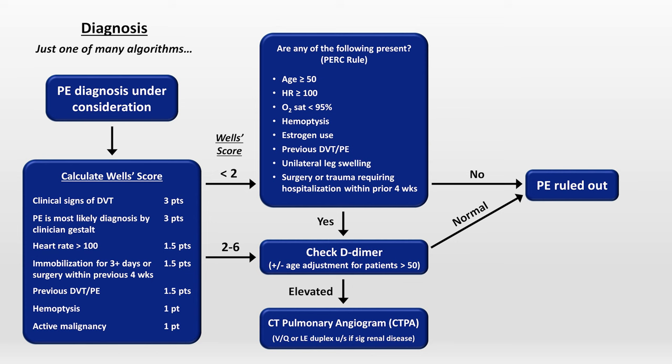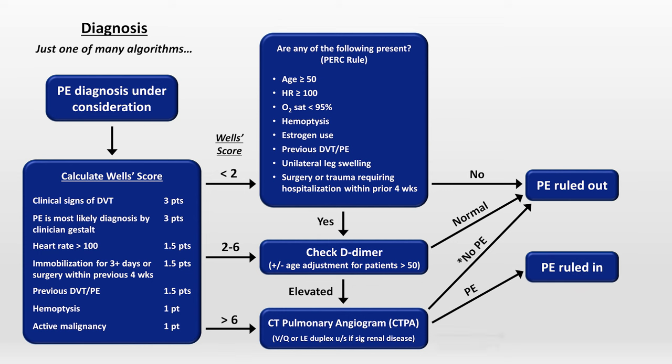On the other hand, if the Wells score is greater than 6, that puts the patient into the highest risk category, in which case a normal D-dimer would not sufficiently decrease the probability of PE to consider it ruled out. Therefore, these patients should all proceed directly to CTPA, or one of the aforementioned alternatives. CTPA is an unusually sensitive test, so if it does not show a PE, a PE has been ruled out for the overwhelming majority of patients. If it does show a PE, it's been ruled in. But if it's inconclusive, you're stuck doing another test.